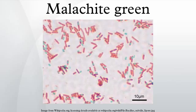Malachite green is prepared by the condensation of benzaldehyde with dimethylaniline to give leucomalachite green: C6H5CHO plus 2 C6H5N(CH3)2, followed by oxidation with manganese dioxide.